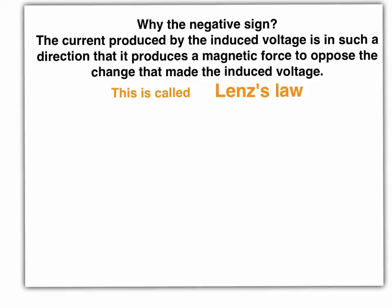So why the negative sign? Lenz's law is like a law of cussedness for physics. And if you do chemistry, it's a bit like Le Chatelier's equilibrium principle. But all it says is that the current produced by an induced voltage is in such a direction that it makes a magnetic field to oppose the change that produced the induced voltage.